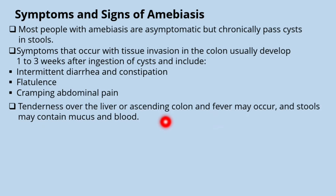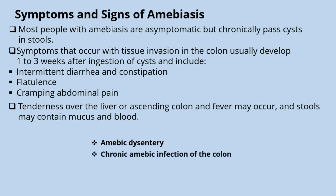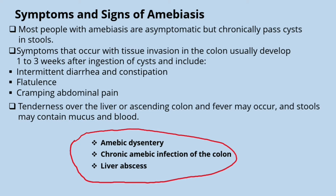There are three main diseases caused by Entamoeba histolytica: amoebic dysentery, chronic amoebic infection of the colon, and liver abscess. Let's talk about these one by one, starting with amoebic dysentery.